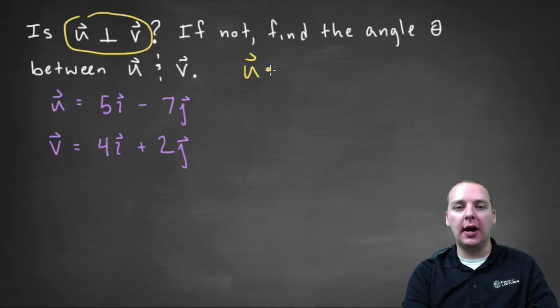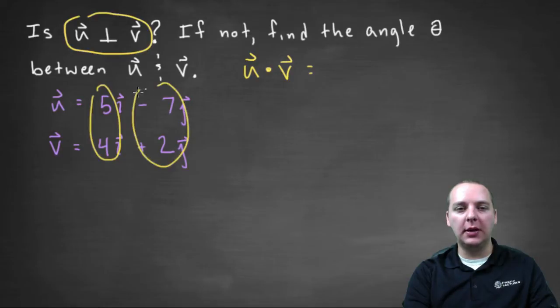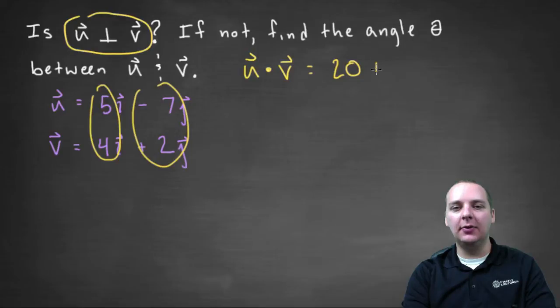So we'll take u dot v, and we should be pretty comfortable with this by now. We know we're going to multiply the i-th components and multiply the j-th components and then add them together. So five times four is twenty, and negative seven times two is negative fourteen. And when we add these, we get six.